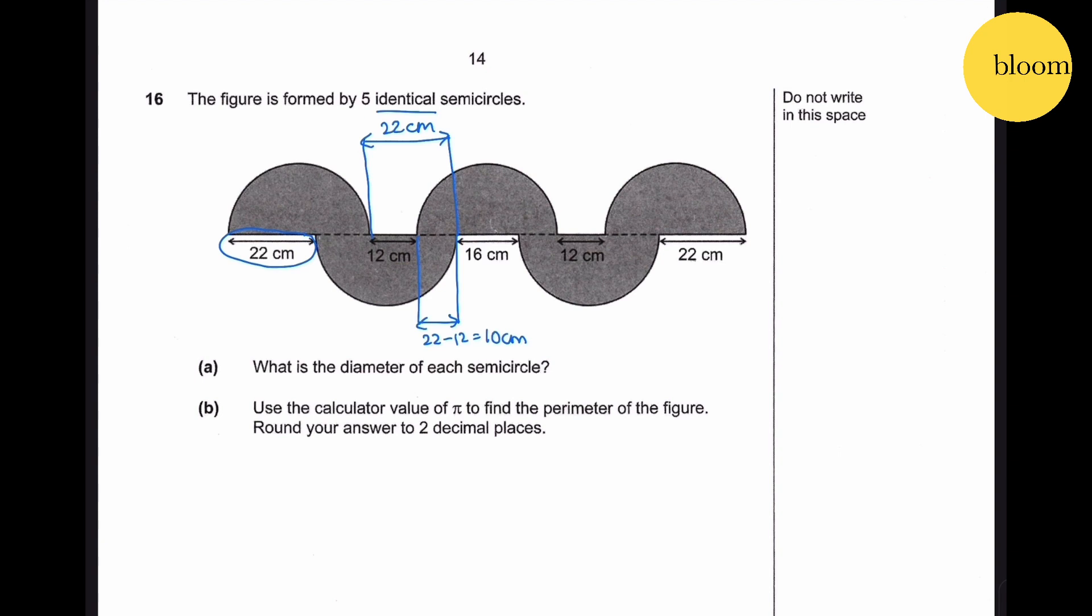Similarly, the distance from here to here is the same as this distance. Therefore it happens to be 22 cm as well. Therefore this distance here is also 10 cm. Diameter is given by this distance: 10 plus 16 plus 10 equals 36 cm.